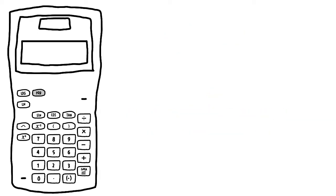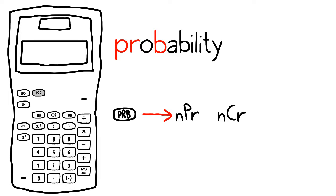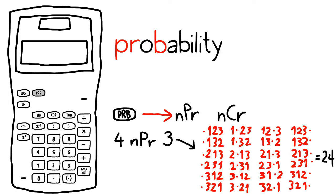The PRB button stands for probability. This button opens a submenu of two different operations. Put one number to the left and one number to the right, and the answer will be how many different ways you could fit this number of things into this many slots. The P means order matters, and the C means order doesn't matter.